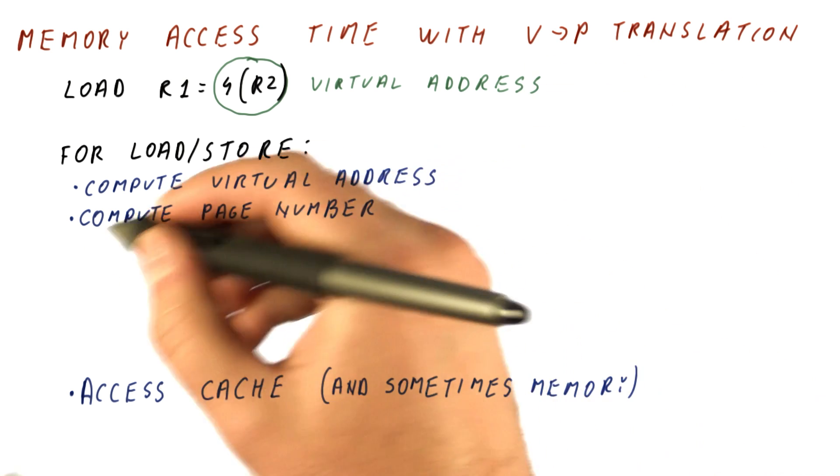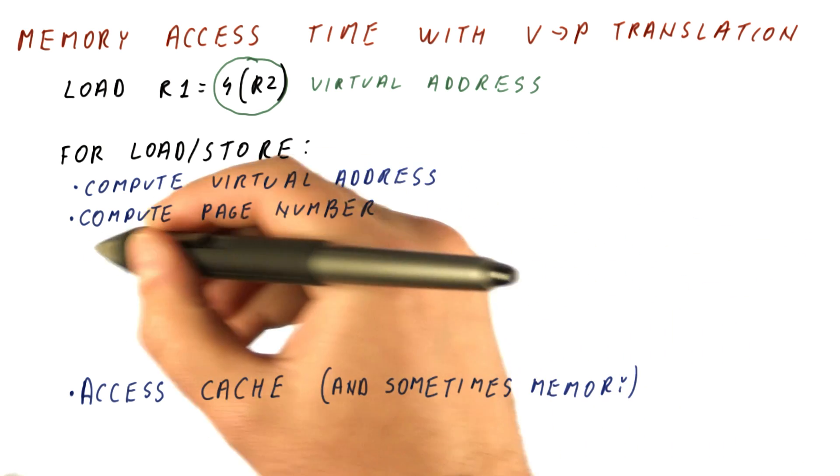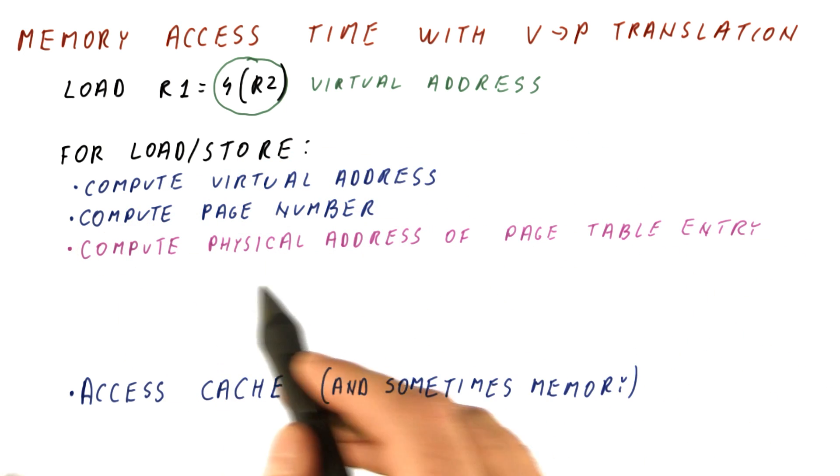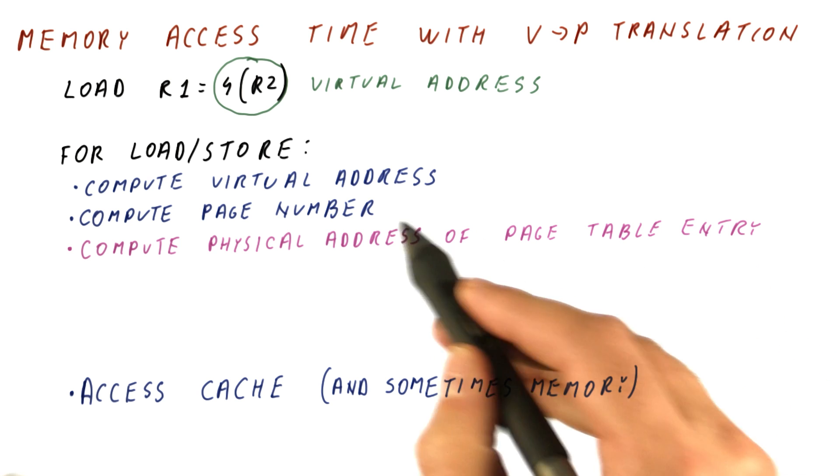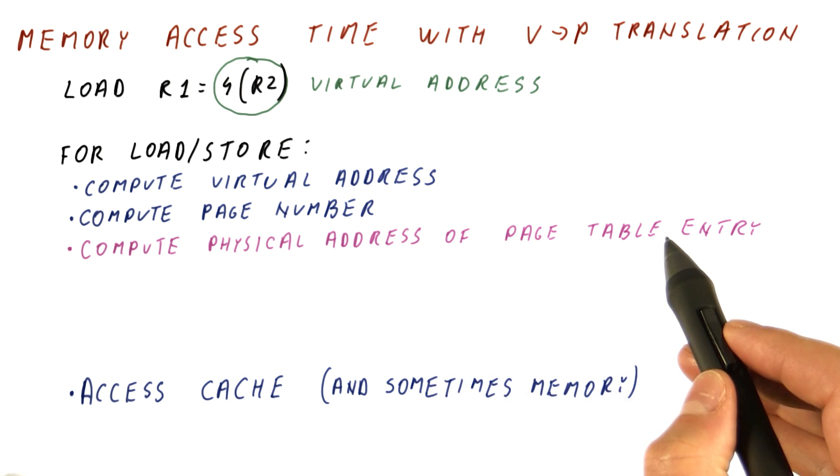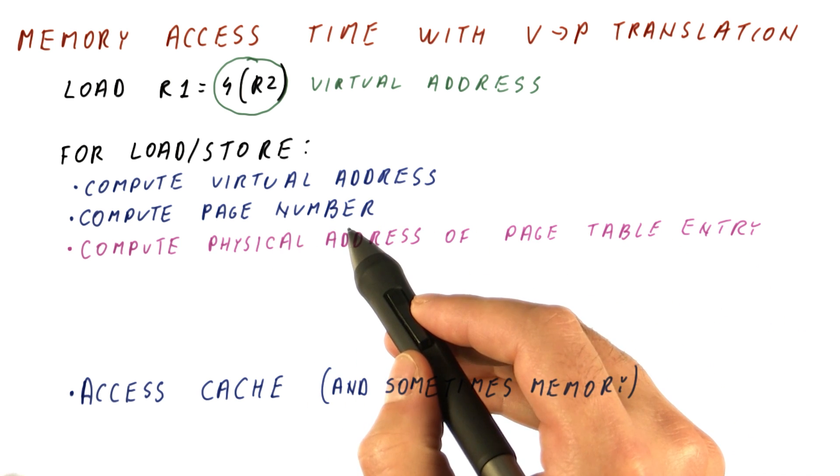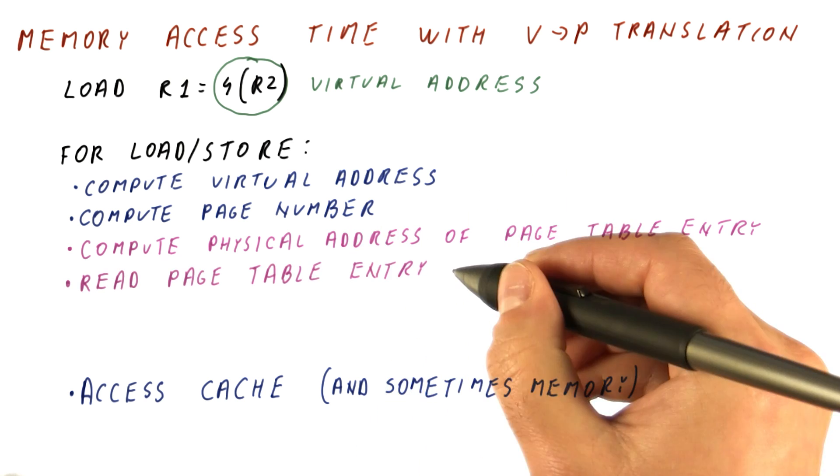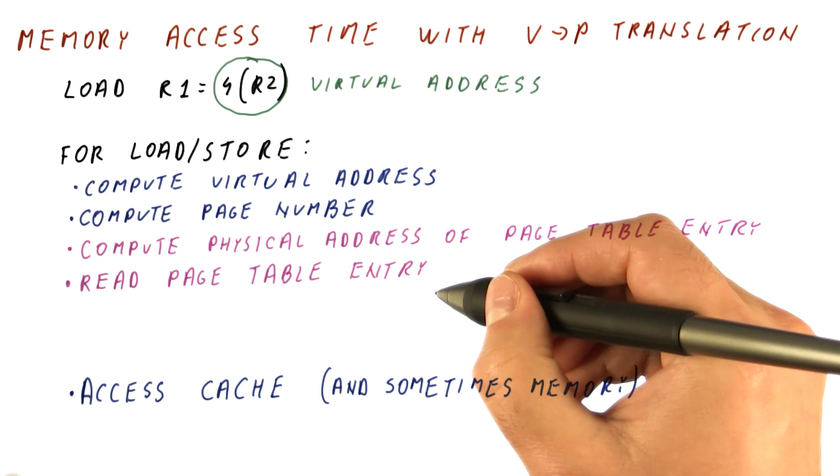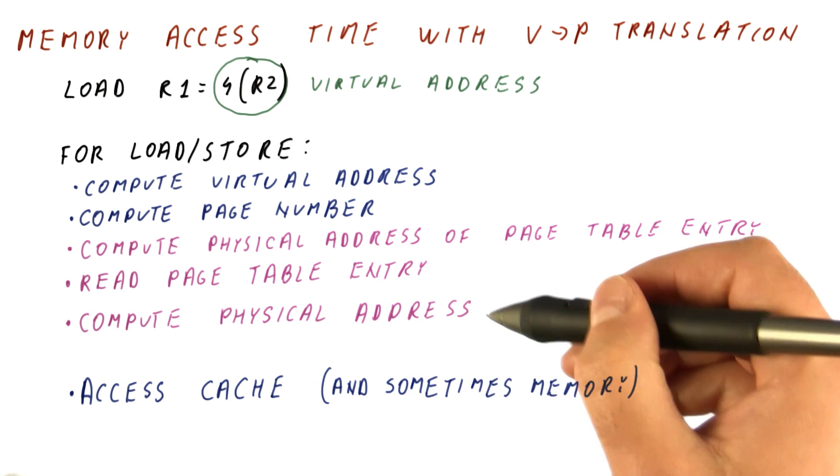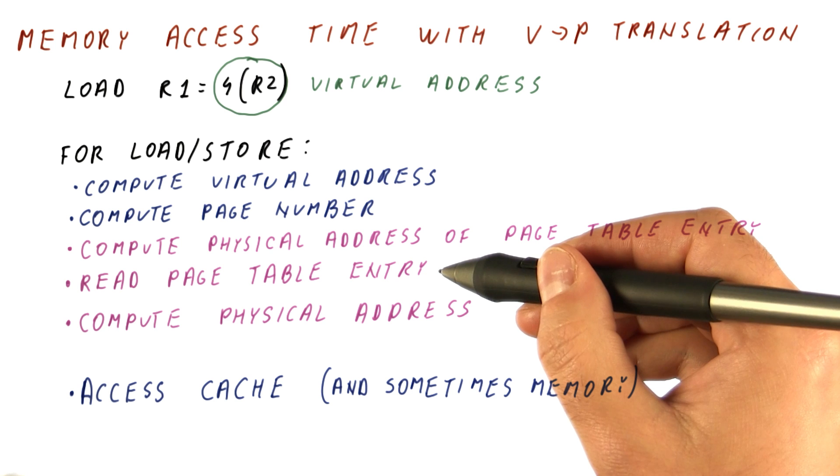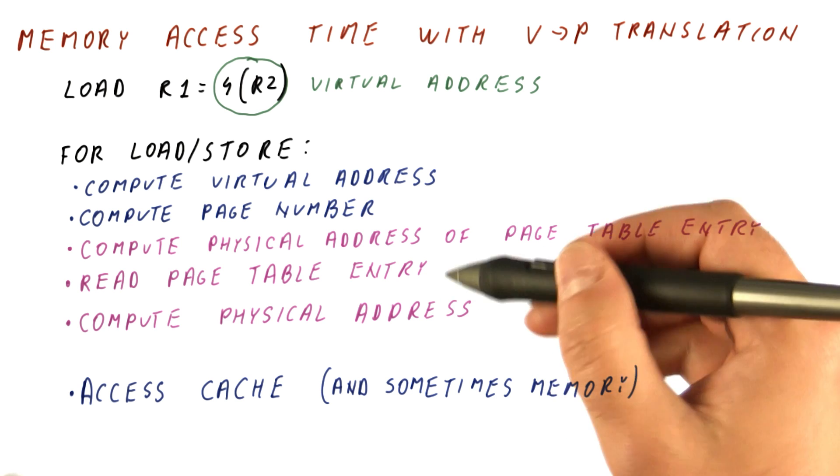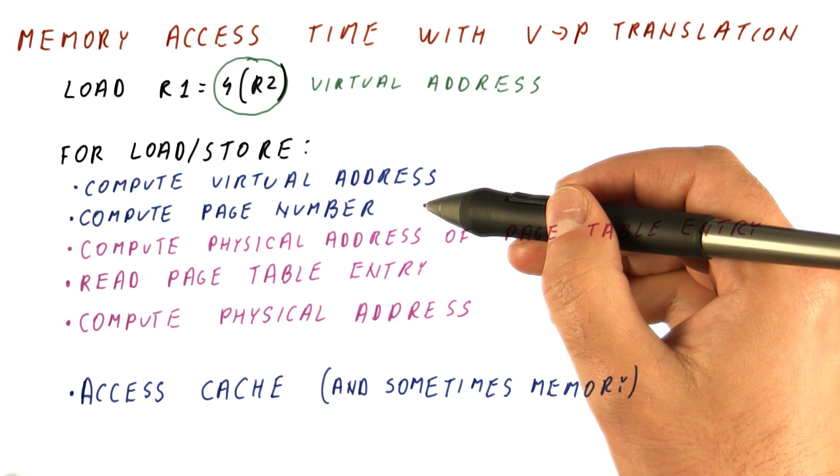With virtual to physical translation, after computing the page number, the processor has to compute the physical address of the page table entry where the translation for the page number is. This is done by adding the page number that we computed to the beginning address of the page table. Then we read the actual page table entry and compute the physical address by combining the physical frame number from the page table entry with the page offset from the virtual address.